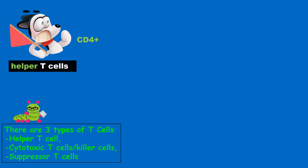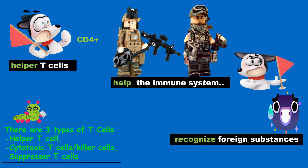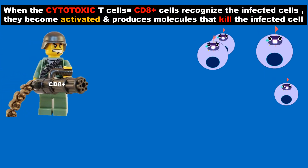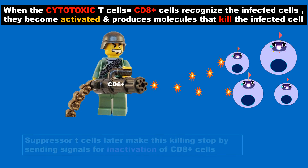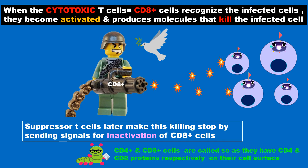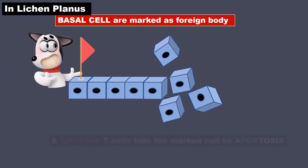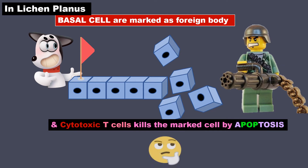CD4 positive cells are the helper T cells — they help the immune system recognize foreign substances. When cytotoxic T cells, i.e., CD8 positive cells, recognize the infected cells, they become activated and produce molecules that kill the infected cell. The suppressor T cells later make this killing stop by sending signals for inactivation of CD8 positive cells. In lichen planus, basal cells are marked as foreign bodies, and cytotoxic T cells kill the marked cells by apoptosis.